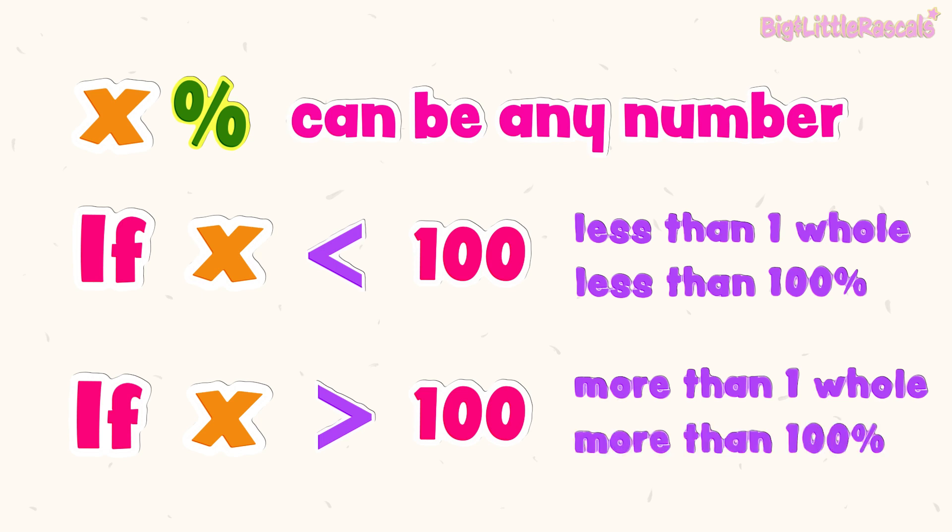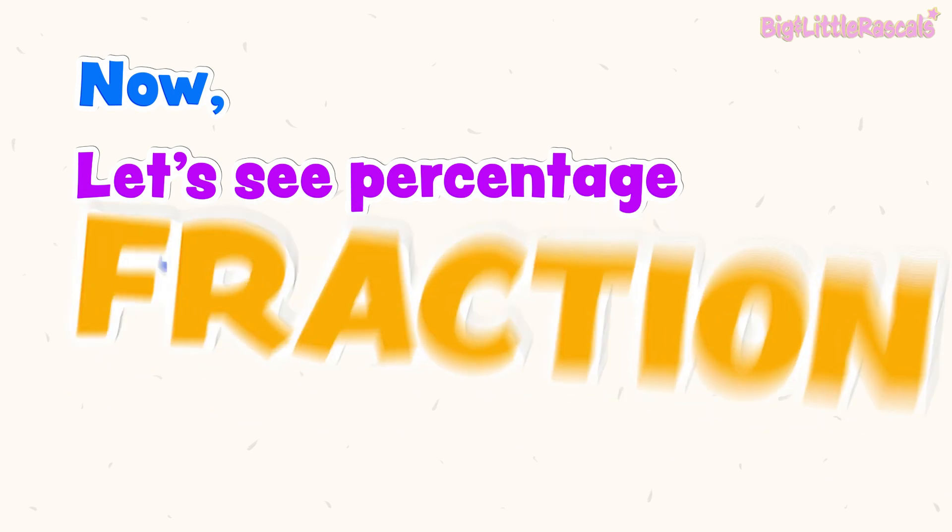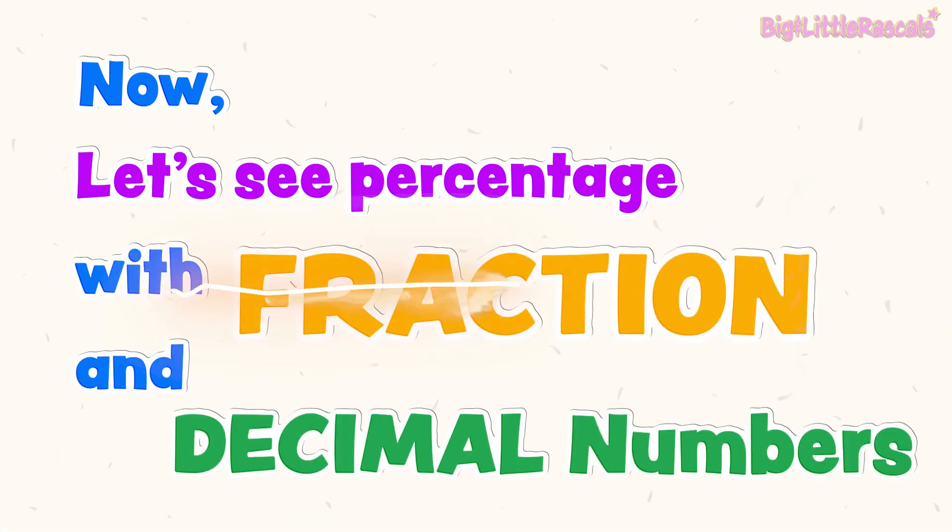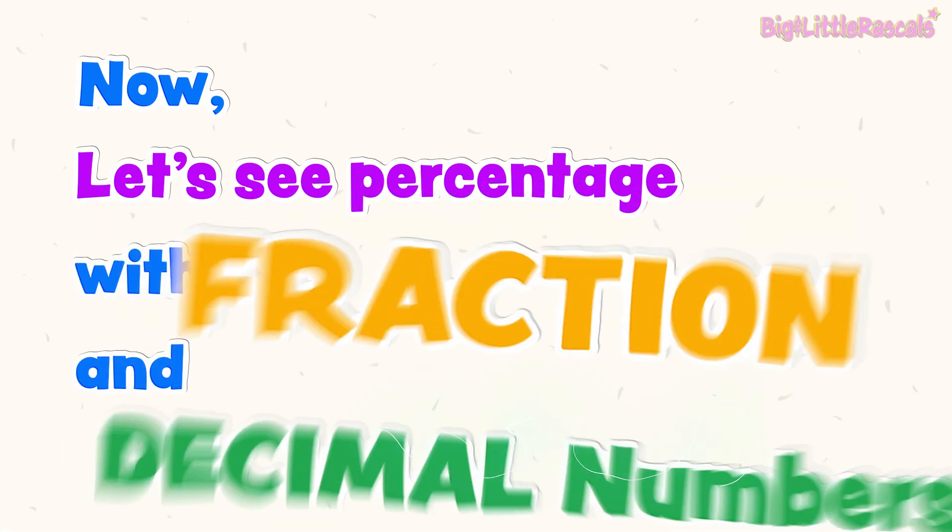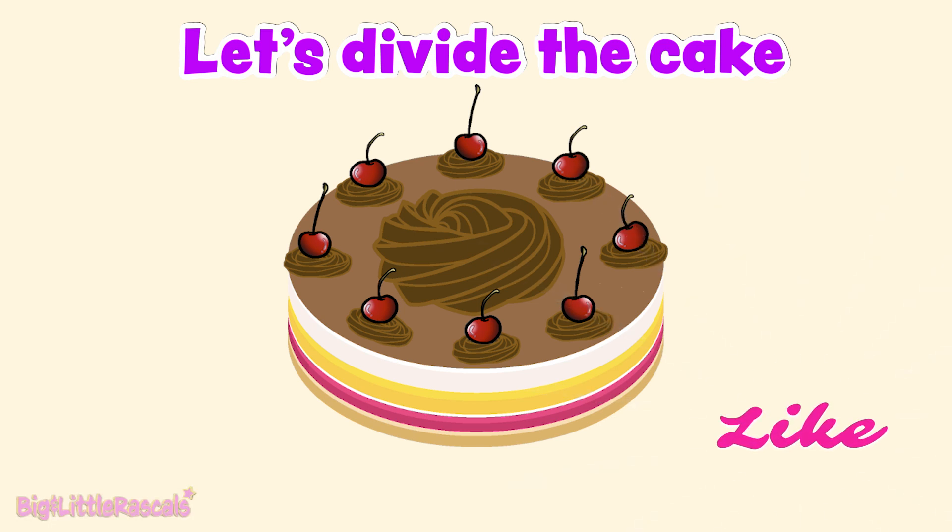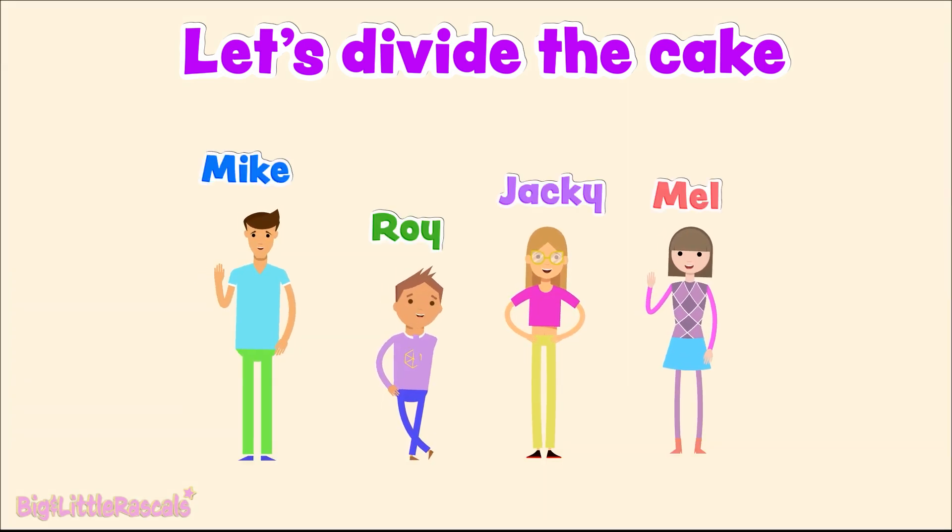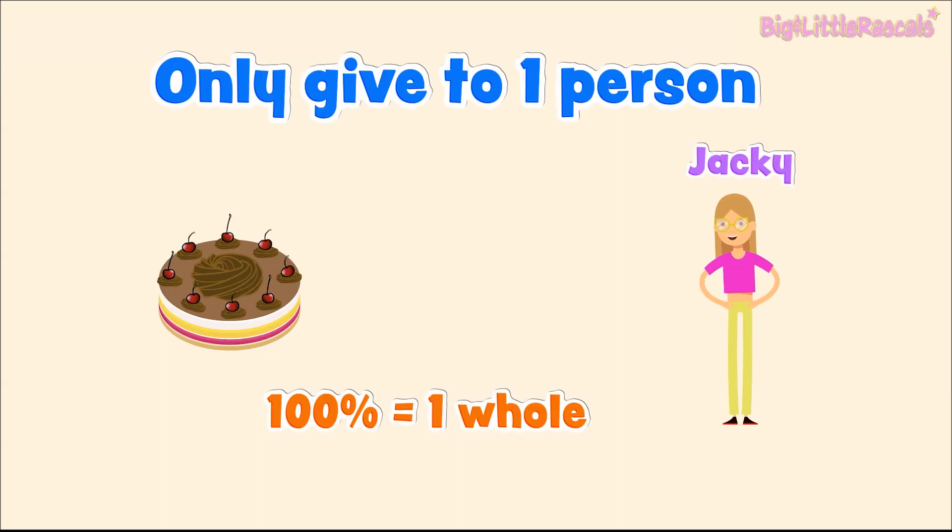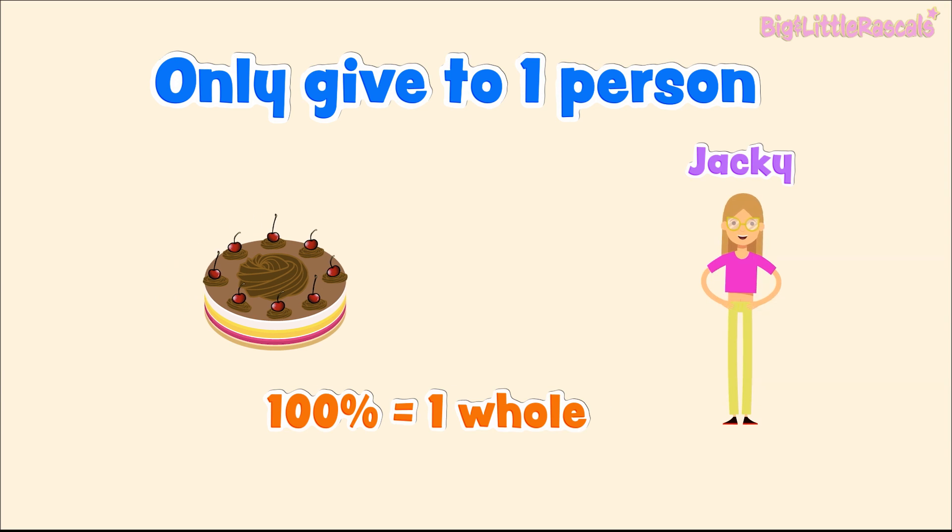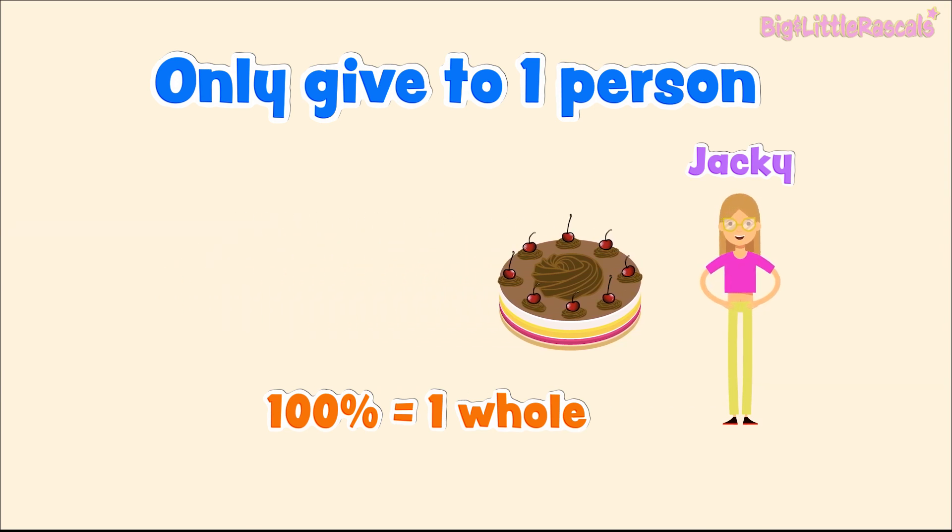Now, let's see percentage with fraction and decimal numbers. Ready? Let's start. Yum! Let's imagine that we need to divide this cake for our friends. Let's meet here Mike, Roy, Jackie, and Mel. If we give all whole cake to Jackie only, then it means Jackie will get 100 percent of the cake. She gets one whole cake.